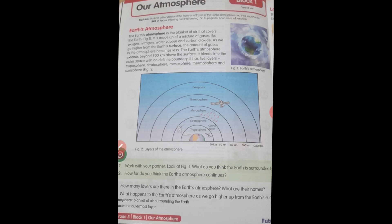Earth's atmosphere. The Earth's atmosphere is the blanket of air that covers the Earth. Here is our Earth and this Earth is surrounded by atmosphere — a mixture of various types of gases. This atmosphere is made up of various gases like oxygen, nitrogen, water vapor and carbon dioxide.